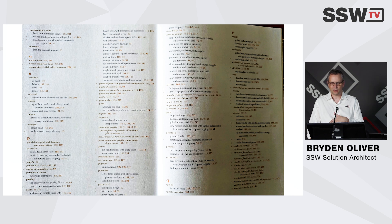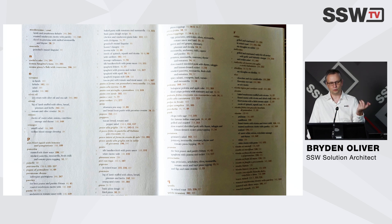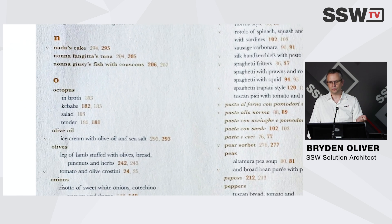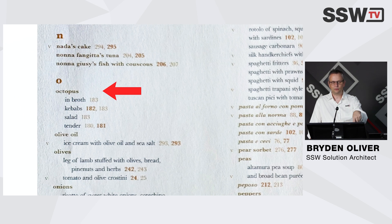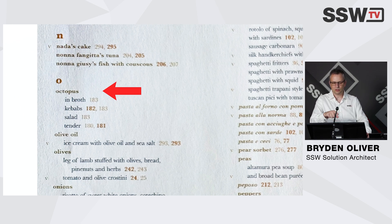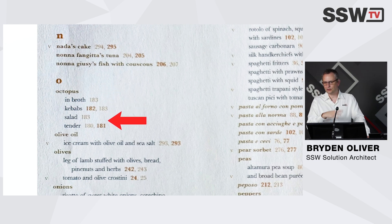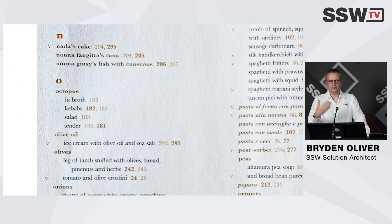So I can look up, say, octopus. I come down to O, find octopus, and then I can quickly find recipes under there. And if I wanted a particular recipe, I could find the ingredient and then find the recipe very quickly in that list. You can really understand quite easily how you would look stuff up.